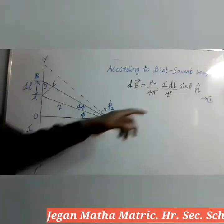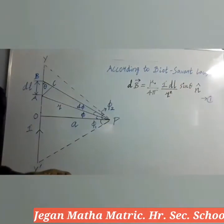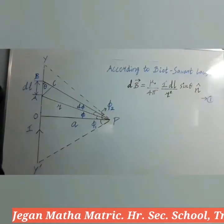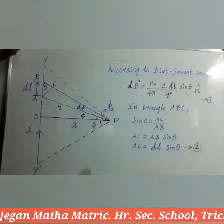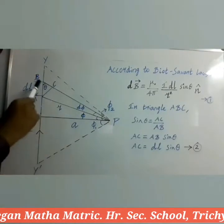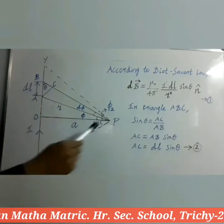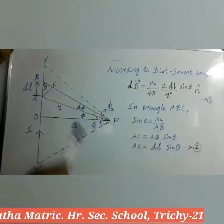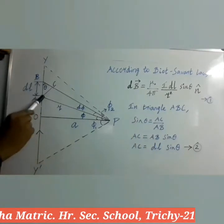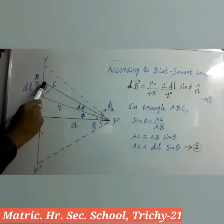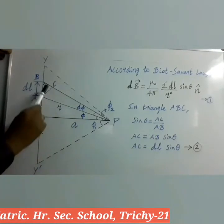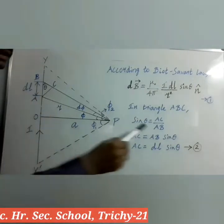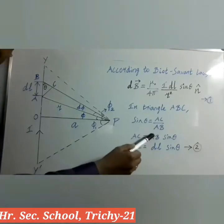Now I am going to take a small triangle from the diagram — triangle ABC. In triangle ABC, sinθ is equal to AC by AB. The formula for sinθ is opposite side by hypotenuse. The opposite side to θ is AC, and at point C we have 90 degrees, so the hypotenuse is AB. So we can write AC by AB.